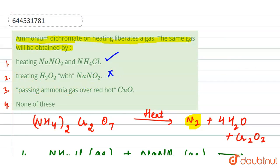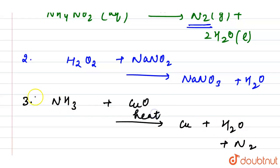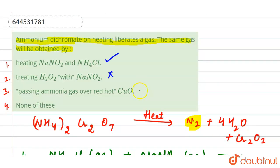Next is passing ammonia gas over red hot CuO. So here when we have ammonia and we have the red hot copper oxide, we have the formation of copper plus water and N2. And if we balance this, here we have two, here we have three, here we have three, and here we have three. So it means this option is also correct.